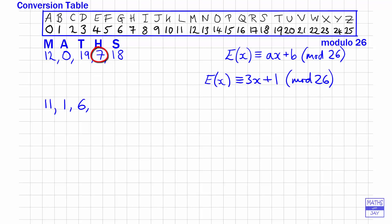The next one was 7. 3 times 7 plus 1 is 22, which is less than 26, so that stays as 22. Finally, 3 times 18 plus 1 is 54 plus 1, which is 55. Take away 52 gives us 3.